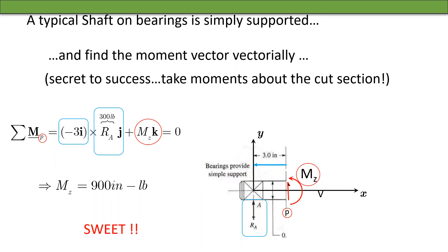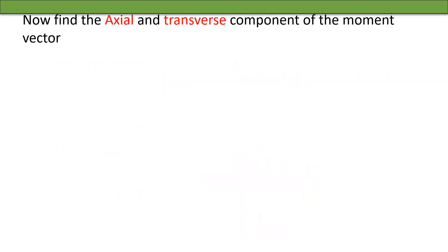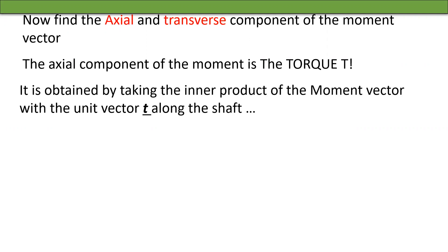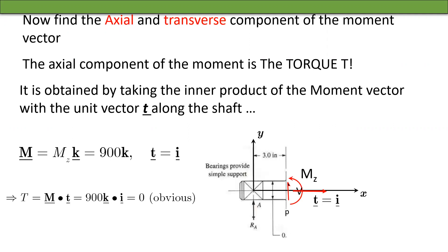Now we find the axial and transverse components of the moment vector. In this problem it's obvious, but in general you should know the approach: the axial component of the moment is the torque, giving twisting action; the transverse component is the bending moment, giving bending action. To find the axial component, take the dot product of the moment vector with the unit vector along the shaft. Our moment is 900k and the shaft unit vector is i, so T = 900k · i = zero — no torque.